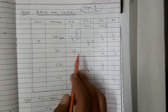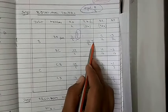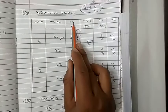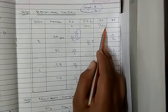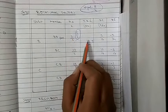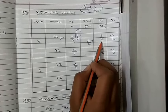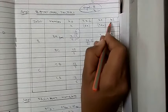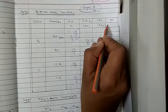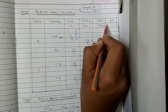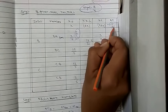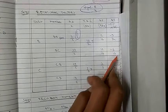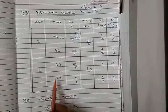The distribution factor is K/ΣK. For BA: (I/6)/(17I/30) equals 5/17, and for BC: 12/17. The rotational factor equals minus 0.5 multiplied by the distribution factor, giving minus 5/34 for BA and minus 6/17 for BC.